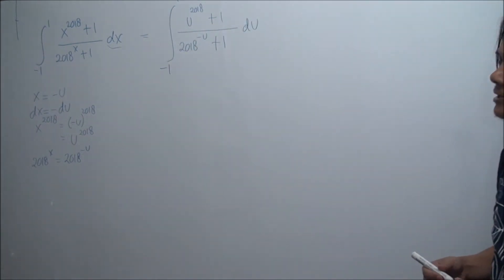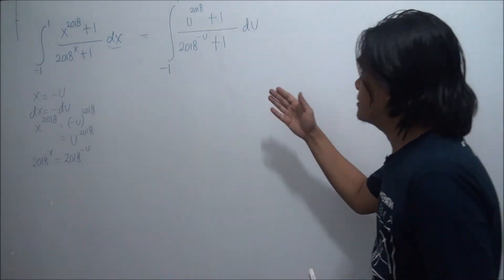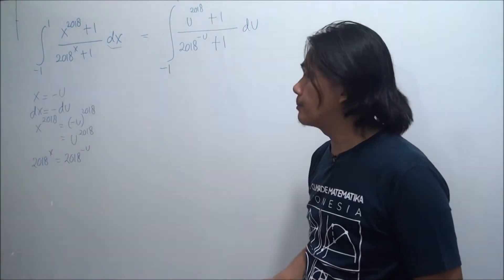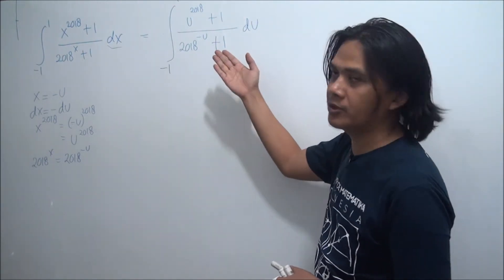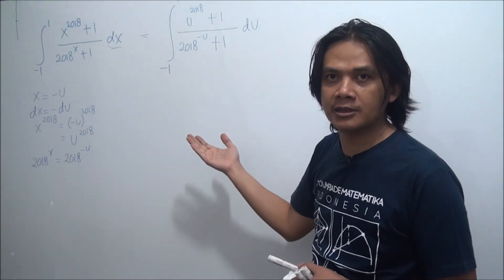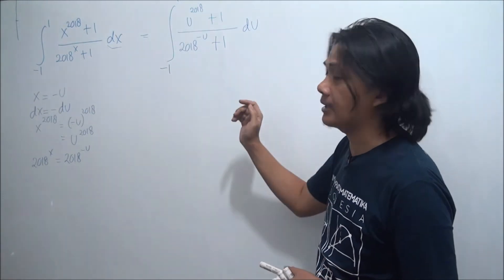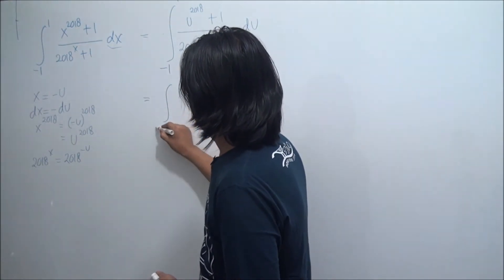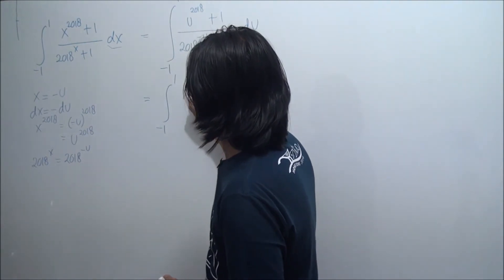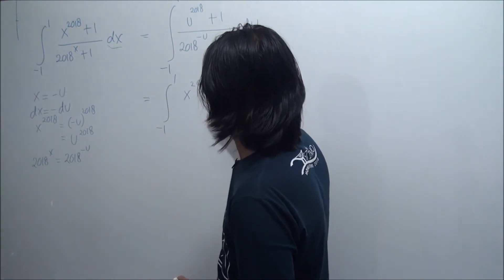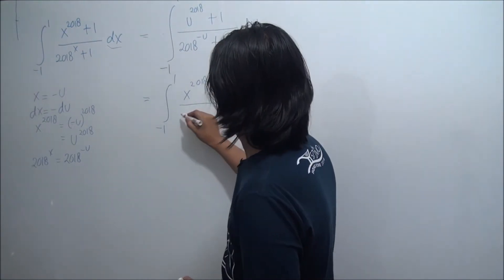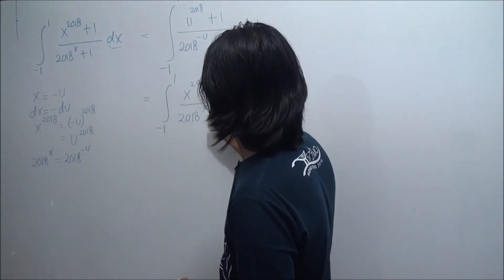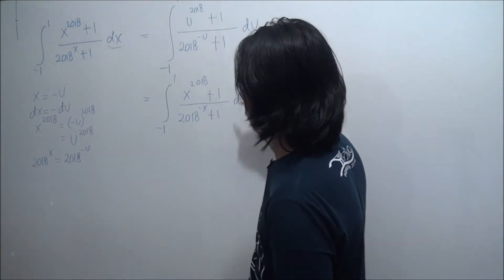Notice that there is nothing special about the variable u — we can perfectly well rename it back to x. So we can write this integral also as the integral from negative 1 to 1 of x to the power of 2018 plus 1, divided by 2018 to the power of negative x plus 1.